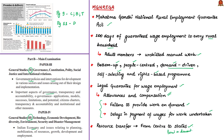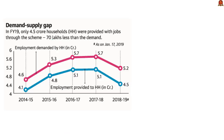There are three pictorial representations in the newspaper. The first graph is regarding the employment provided under MGNREGA and analyzes the demand-supply gap — demand meaning employment demanded by households and supply meaning jobs provided by the government. There has been a 5.2 crore demand for jobs by households under MGNREGA for the financial year 2018-19, with data available only until January 17, 2019. But out of 5.2 crore demanded, only 4.5 crore jobs were provided by the respective state governments.